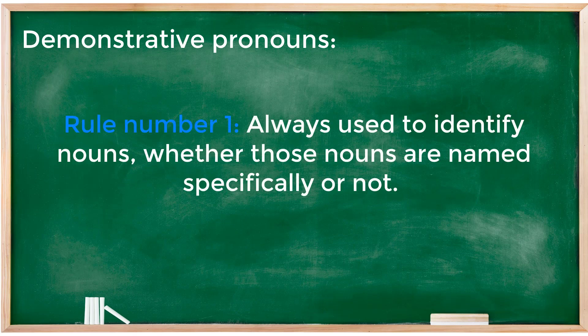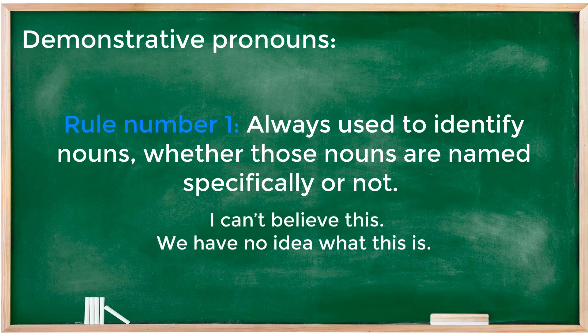Rules. There are three rules about demonstrative pronouns. Rule one: they are always used to identify nouns, whether those nouns are named specifically or not. For example: 'I can't believe this' or 'We have no idea what this is.'